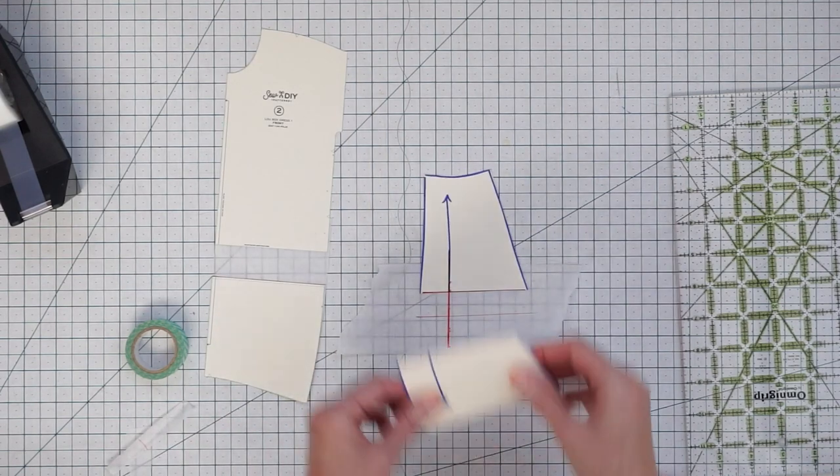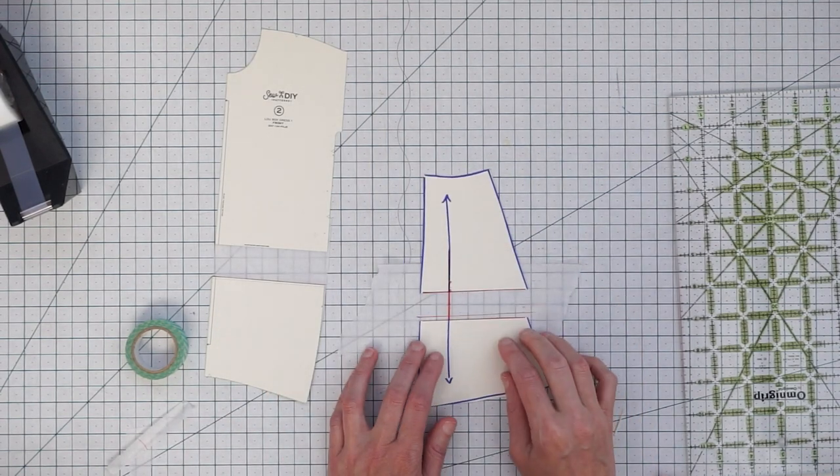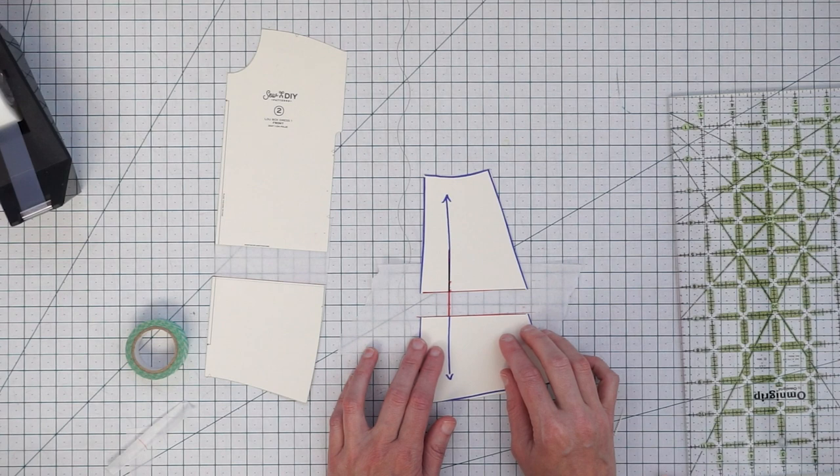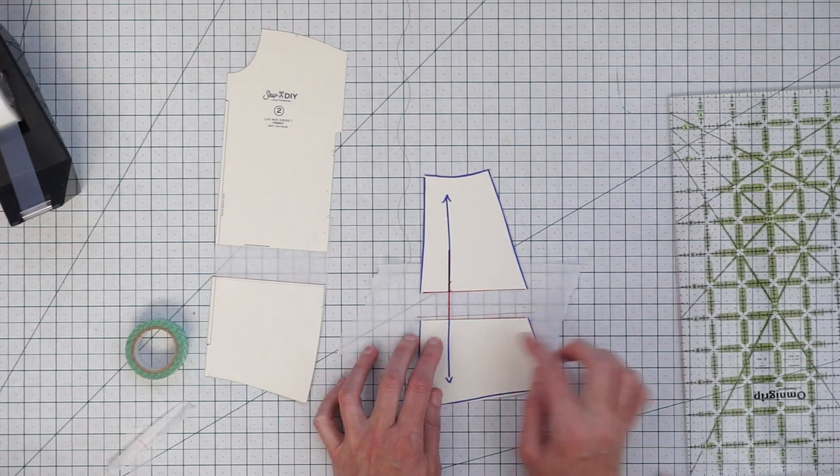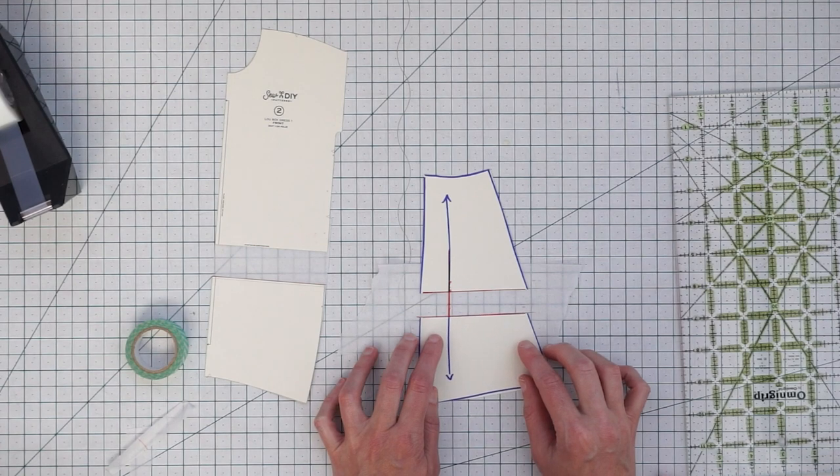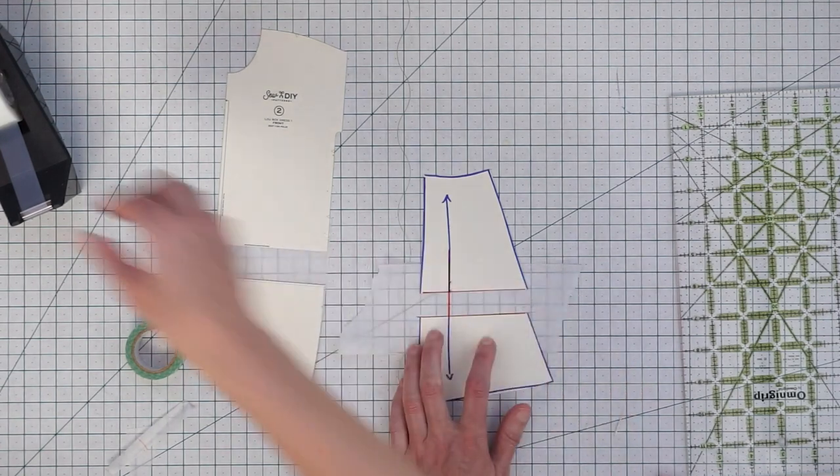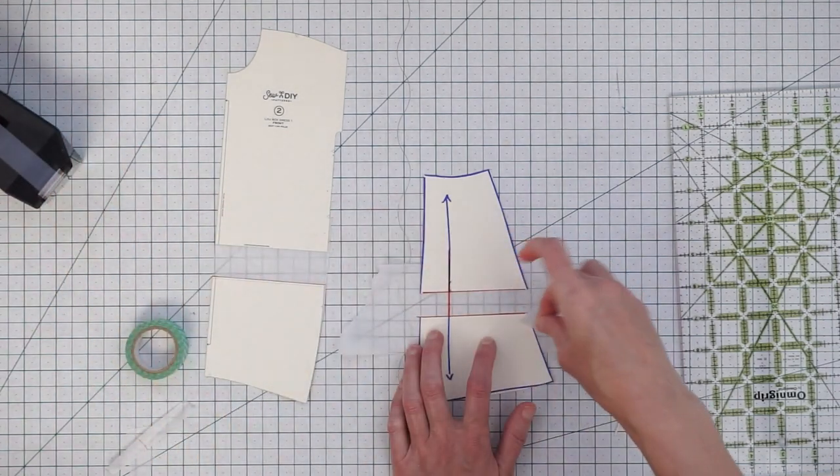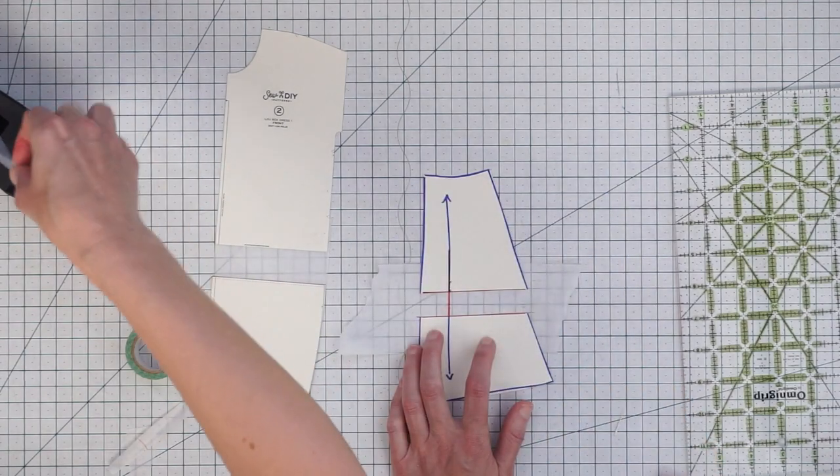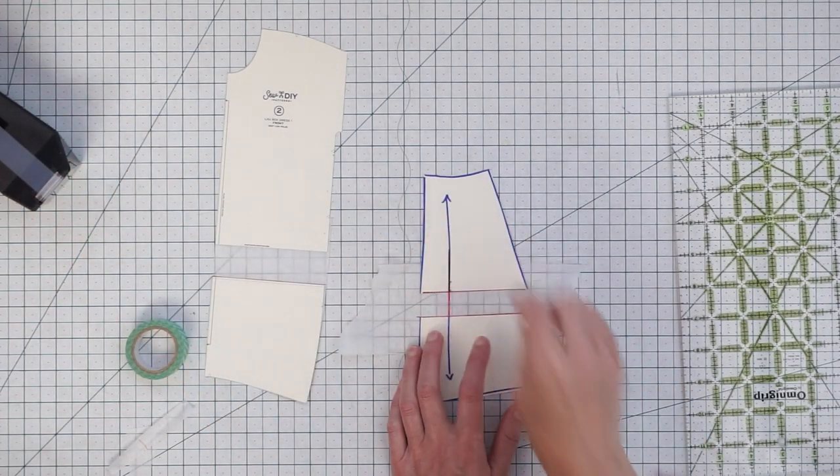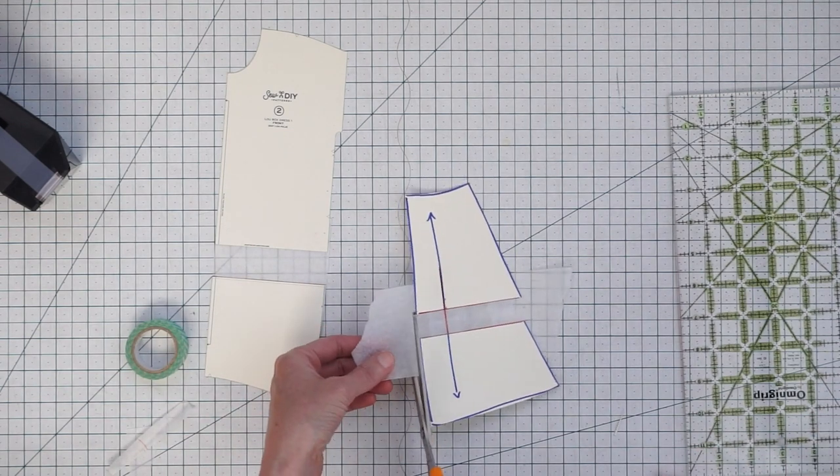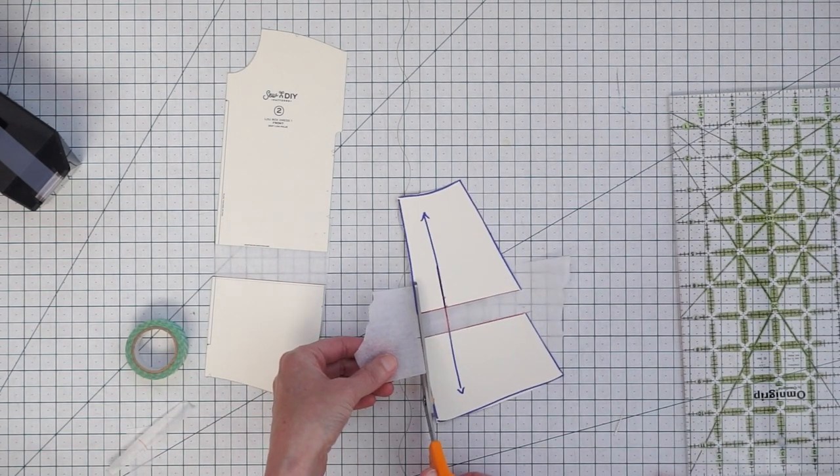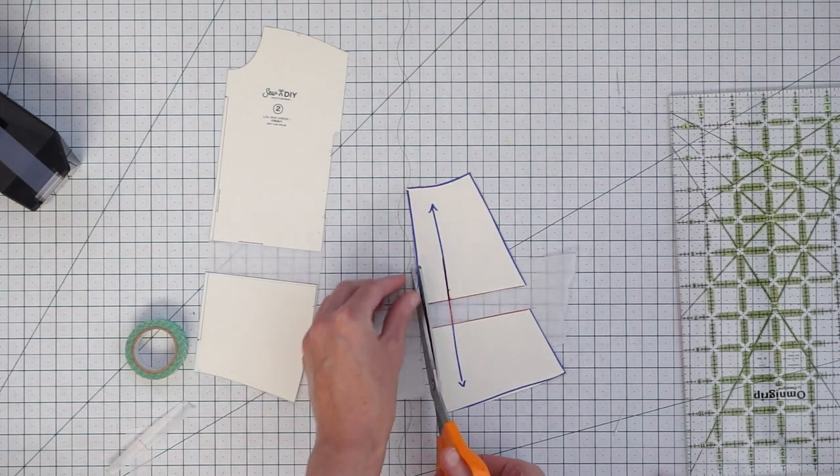Now for our skirt we will line up the grain line with that extended grain line that we drew. And then this cut edge will be with our guideline. So just want to make sure you keep everything nice and straight. And you tape it in place.